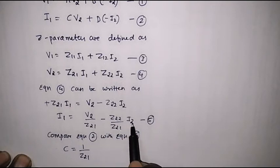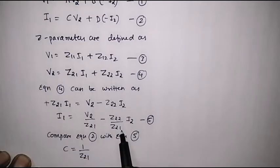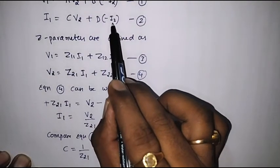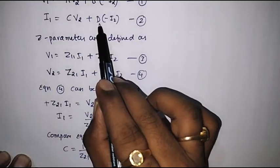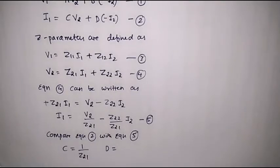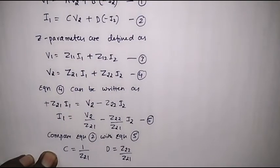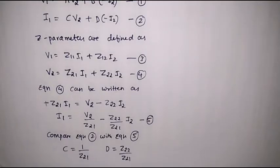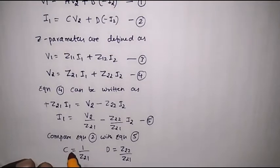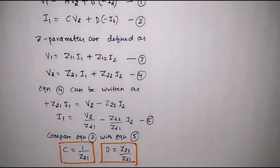Similarly, the coefficient of I2 in equation five is minus Z22 over Z21, and the coefficient of I2 in equation two is D. Therefore, D is equal to Z22 over Z21. Thus I have expressed C and D of the ABCD parameters in terms of Z parameters. Now let us see how to express A and B in terms of Z parameters.